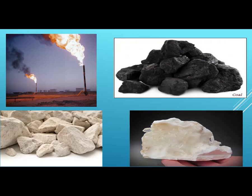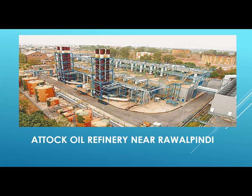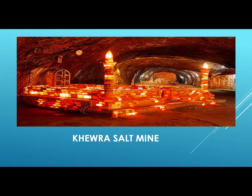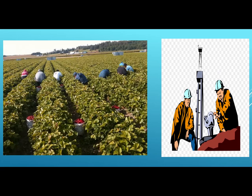Here is a picture of coal, a picture of a refinery, and gypsum. This is the picture of an oil rig refinery in Iran. This is Khewra salt mine in Punjab. This is Arak oil refinery in Iran. People living in plateau regions of Pakistan and Iran are engaged in agriculture, and many work in quarries, oil drilling companies, and refineries.